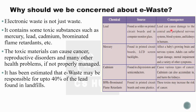Lead has consequences on the central and peripheral nervous system, blood system, and kidneys. Mercury is found in PCBs, circuit boards, and LCD screen backlighting. Mercury exposure can damage a newborn baby's developing brain and nervous system, causing organ damage, mental impairment, and mental retardation. Cadmium is found in semiconductor chips and resistors and is linked to kidney cancer.